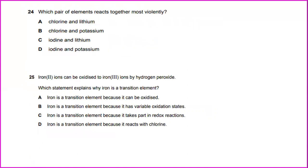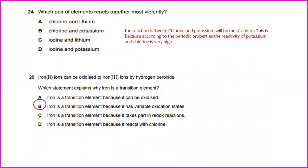Which pair of elements react together most violently? The answer will be chlorine and potassium. The reaction between chlorine and potassium will be most violent and this is because according to the periodic properties, the reactivity of potassium and chlorine is very high. So, iron 2 ions can be oxidized to iron 3 ions by hydrogen peroxide.